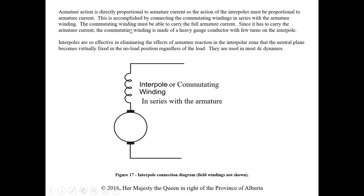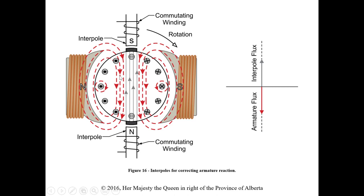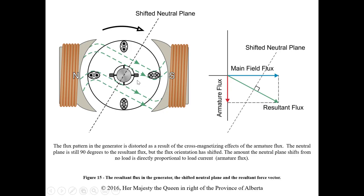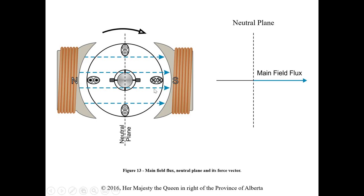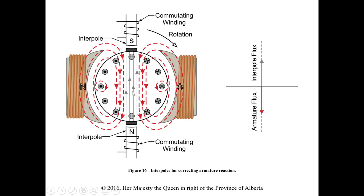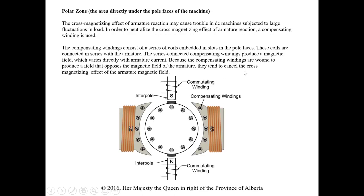Interpoles are so effective in eliminating the effects of armature reaction in the interpolar zone that the neutral plane becomes virtually fixed in the no-load position regardless of load. By adding interpoles with commutating windings, we cancel out this armature field flux with the interpole flux. The same current flows through both, so the same intensity is produced, ideally cancelling the armature flux completely and preventing distortion of the main field.